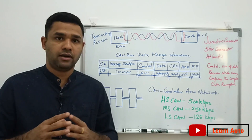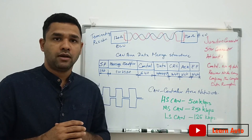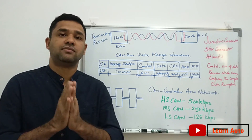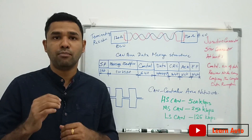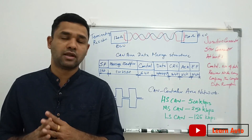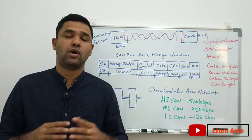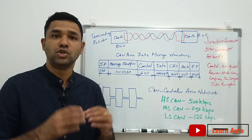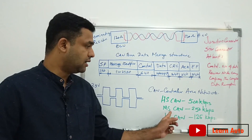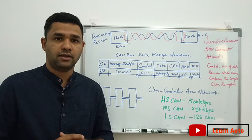CAN is available in high speed CAN, medium speed CAN, and low speed CAN. The maximum CAN speed can be 1 Mbps. High speed CAN is 500 Kbps, medium speed CAN is 250 Kbps, and low speed CAN is 125 Kbps.